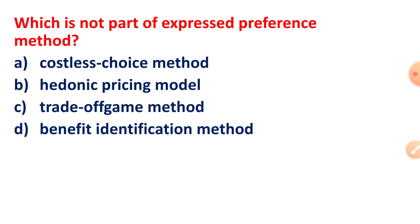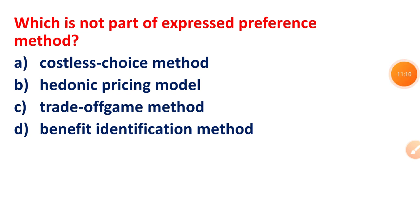Which of the following is not part of the expressed preference method? What is the expressed preference method? Option D: benefit identification method.